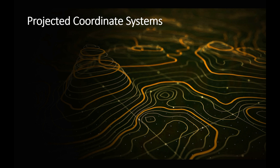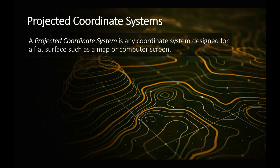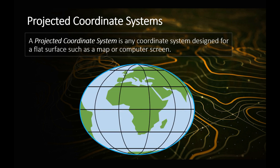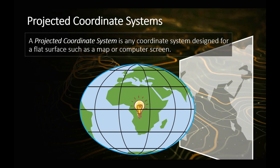So that was spherical coordinate reference systems. Now we'd also talk about projected coordinate reference systems. A projected coordinate reference system is any coordinate system designed for a flat surface such as a map or computer screen. So here we've got our globe, and if you imagine that globe as a wire frame, and you put a light bulb in the middle of that globe and turn it on, it'll shine out through the wire globe. And if you position a flat piece of paper or a plane next to that globe, the light will project through the wire globe and onto the flat plane. That's essentially what a projection does — it projects the round shape onto a flat surface.